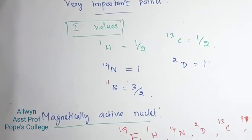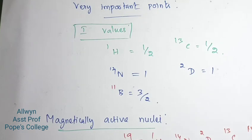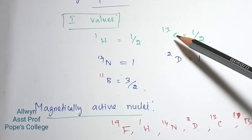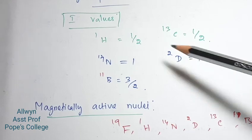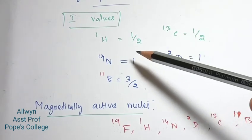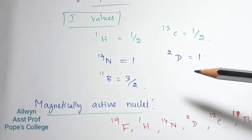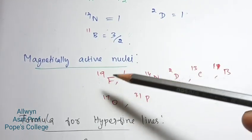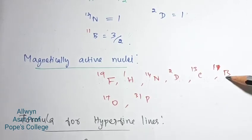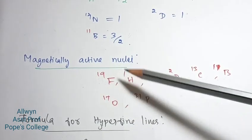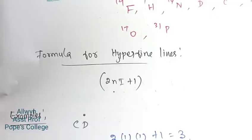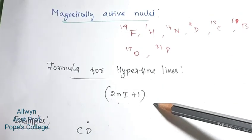Very important points: the I values are — C13 is 1/2, N14 is 1, D (deuterium) is 1, and P31 is 3/2. Nitrogen I = 1 by 2. Magnetically active nuclei include F19, H1, N14, D2, C13, O17, and P31. Electrons interact with these nuclei via hyperfine coupling.